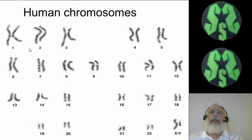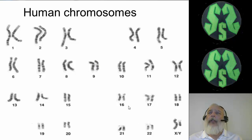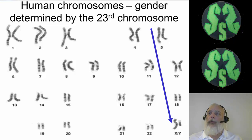If you take a look at this and zoom in, most of these chromosomes in the pairs are roughly equal in length to their partner. But if you take a look at the 23rd pair, you may notice that one chromosome is significantly longer than the second chromosome. This 23rd pair is the pair that's going to determine the gender of the baby.